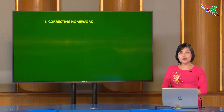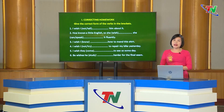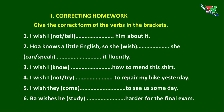Now the first part: correcting homework. Ở giờ trước các em đã được ôn tập về câu mong ước ở quá khứ, hiện tại và tương lai. Câu mong ước ở quá khứ dùng để diễn tả hoặc nuối tiếc một điều gì đó đã xảy ra hoặc một sự việc không có thật ở quá khứ. Câu mong ước ở hiện tại thể hiện muốn mong ước một điều gì đó không có thật ở hiện tại. Và câu mong ước ở tương lai thể hiện muốn mong ước một điều gì đó sẽ xảy ra hoặc một điều tốt đẹp sẽ diễn ra trong tương lai. Chúng ta cùng nhìn vào 6 câu trên bảng và chữa 6 câu bài tập về nhà.